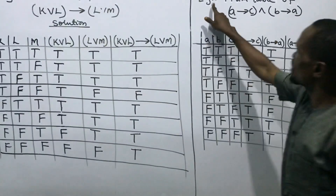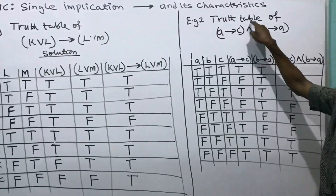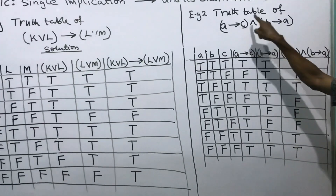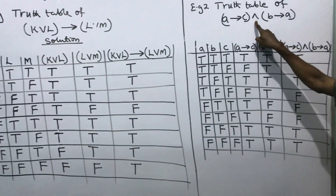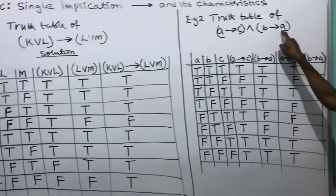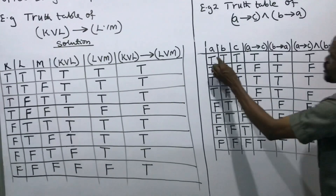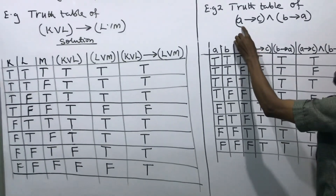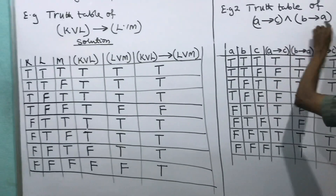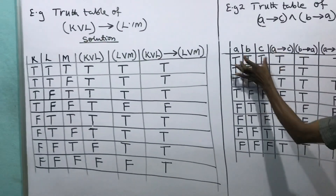Let us look at another example — example 2. The truth table of A implies C, AND B implies A. Look at how many variables I have here: A, C, B — that's three variables. I've set them down: A, C, B.